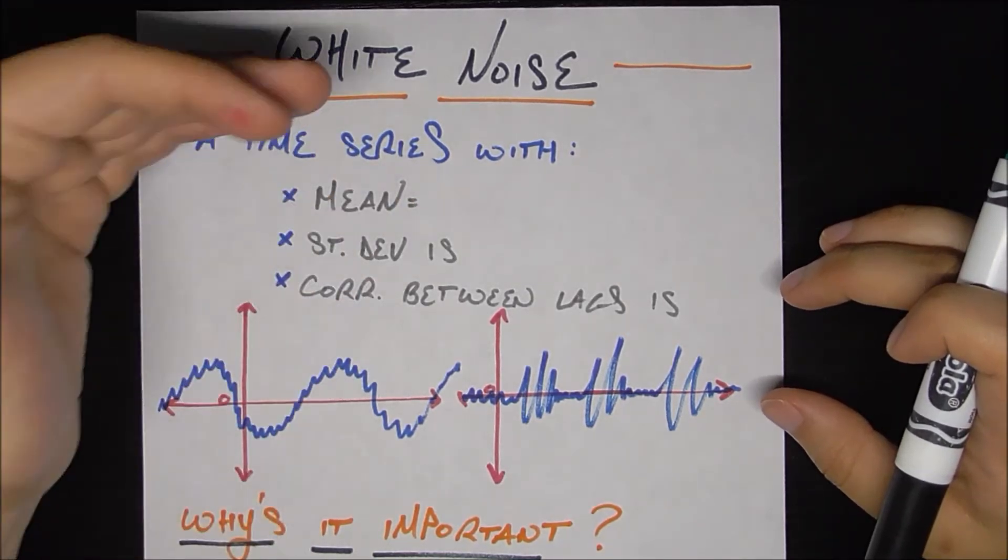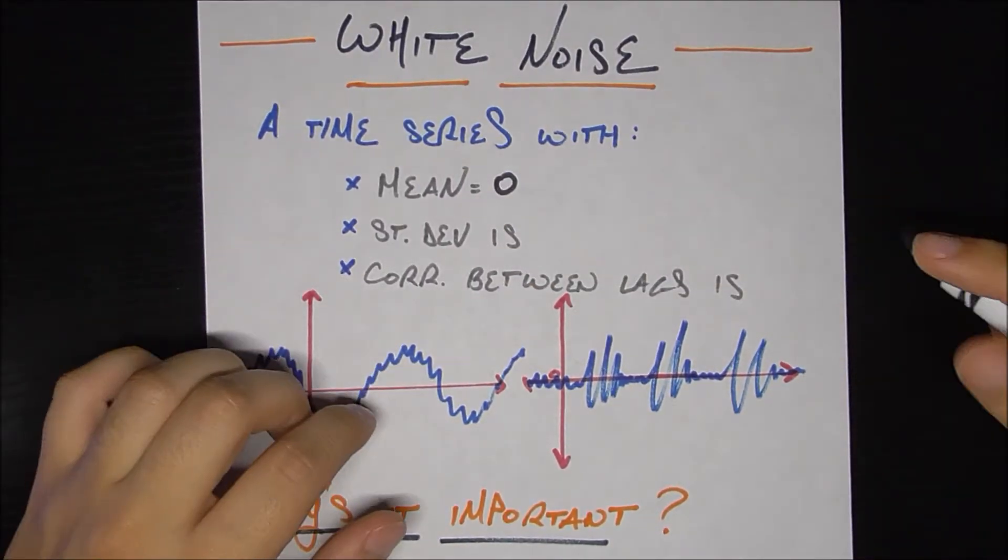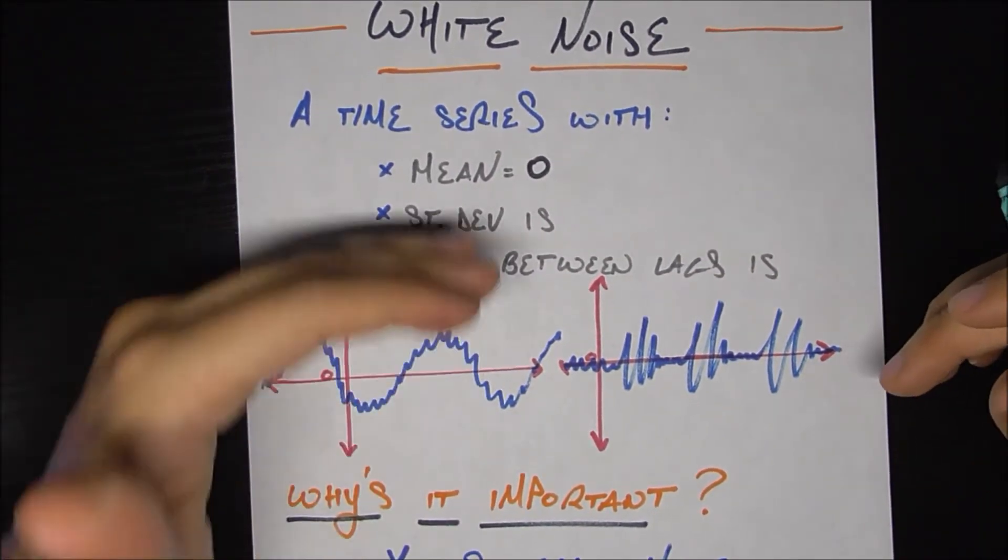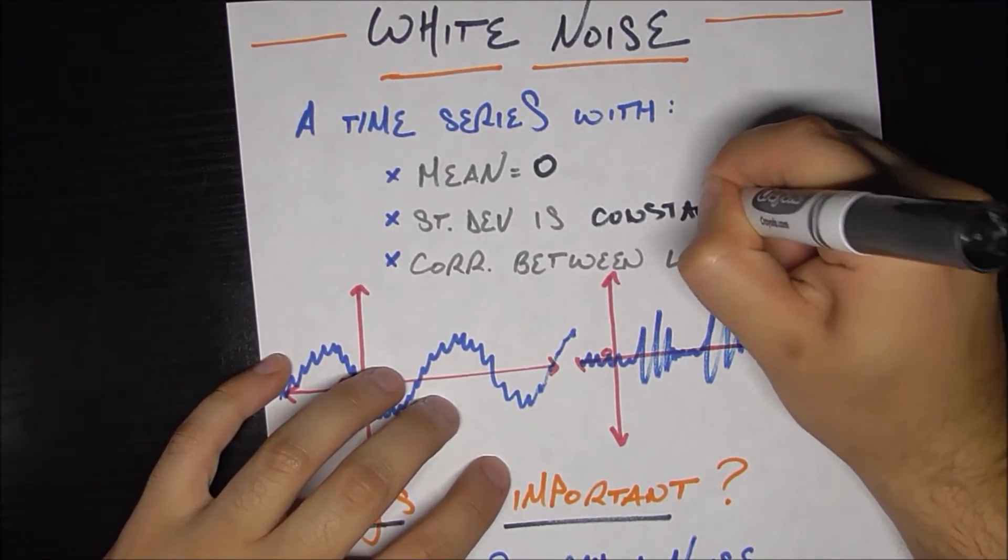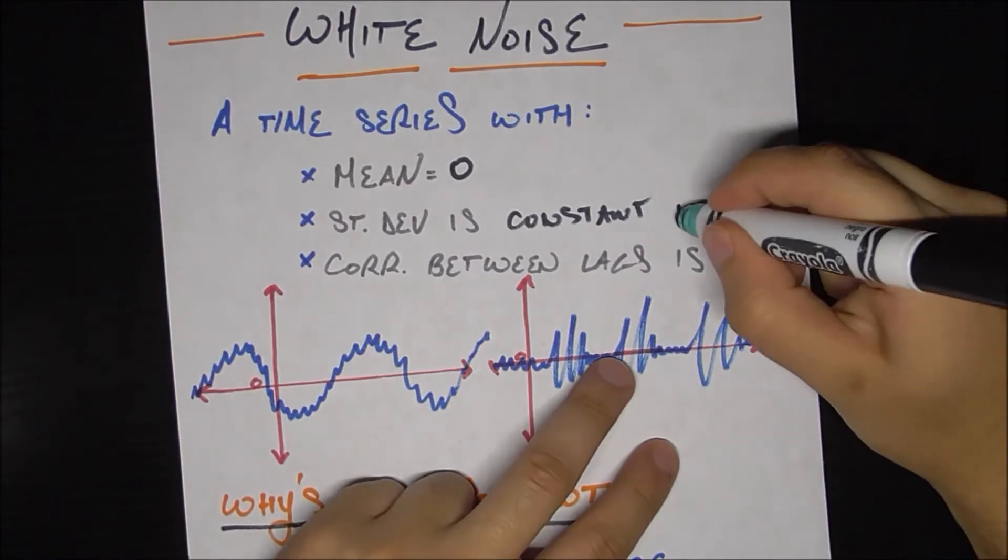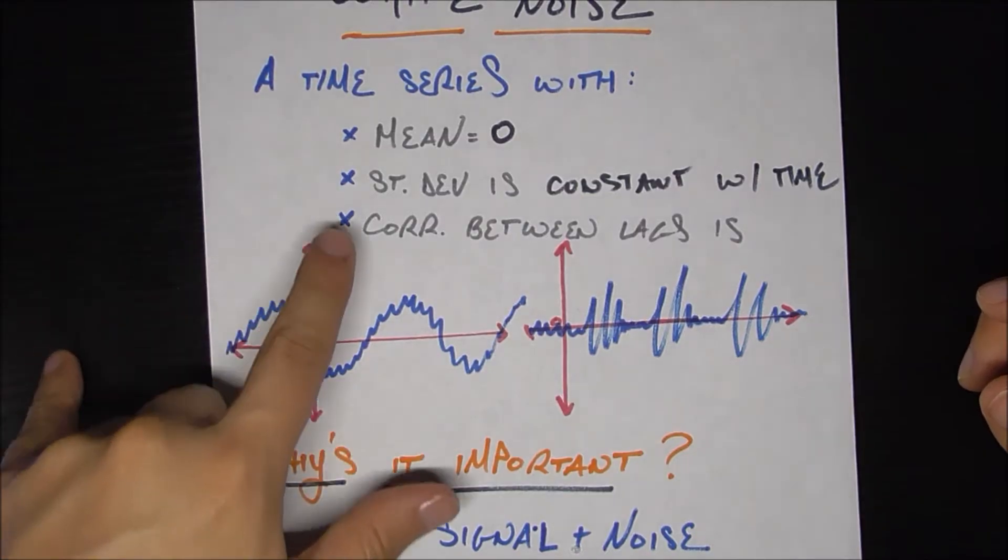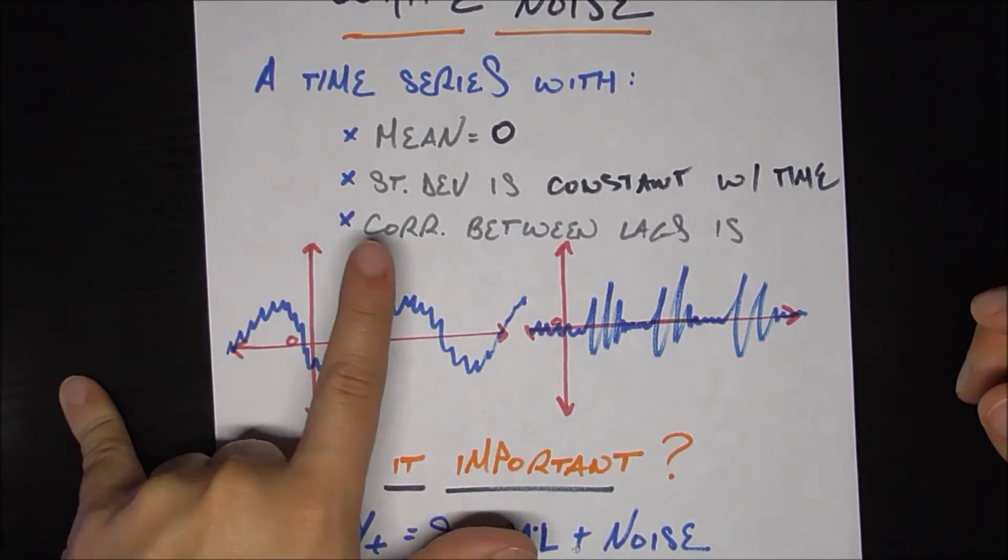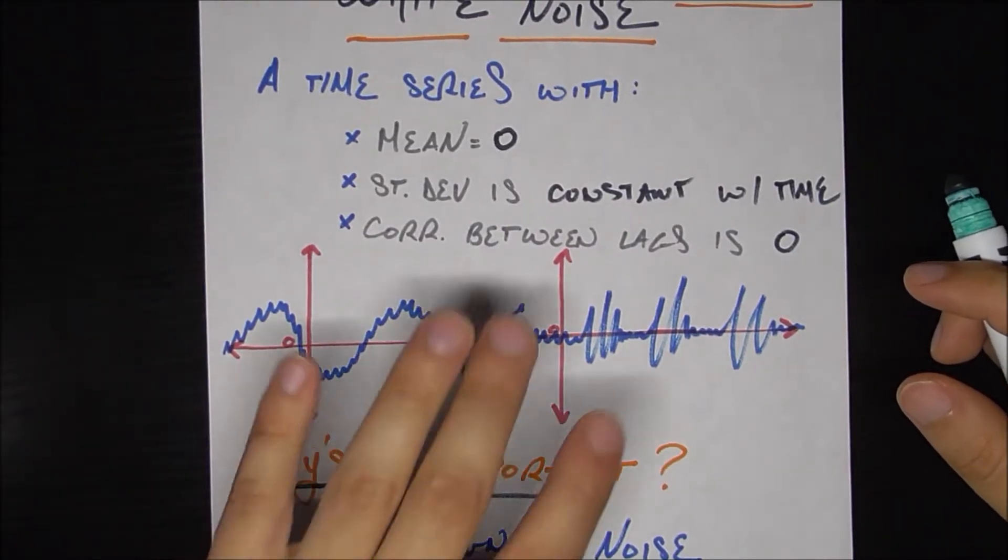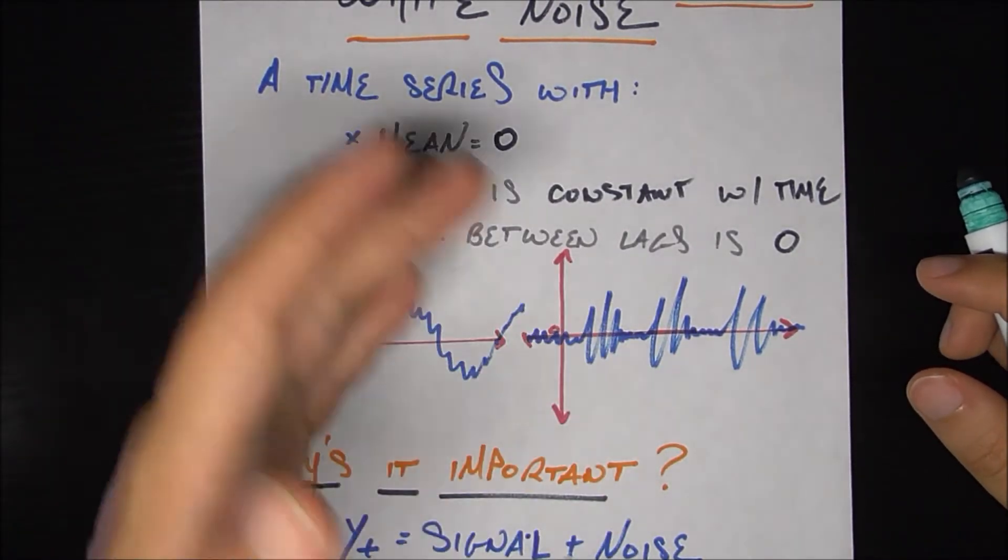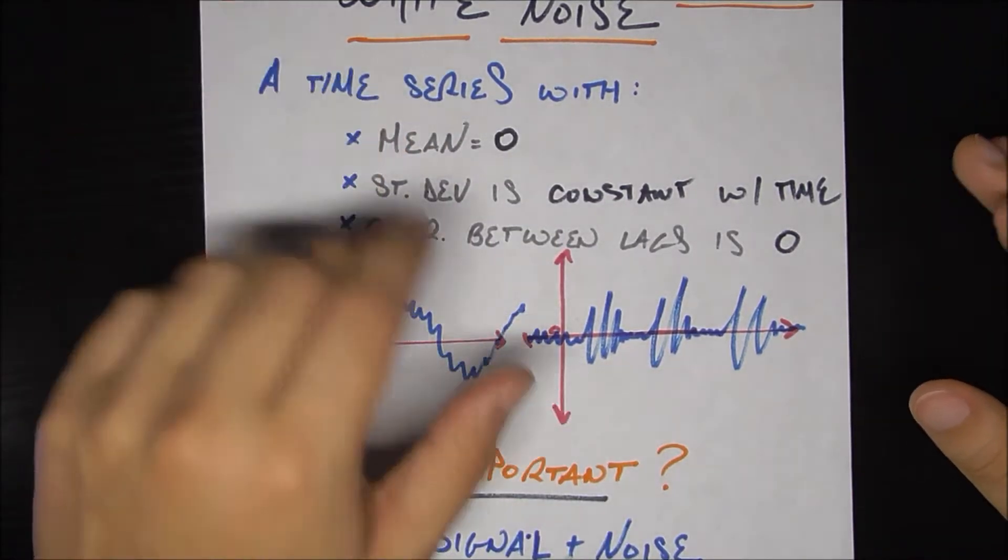A time series is classified as white noise if it has mean equal to zero, that's one criteria. If the standard deviation or the volatility of the time series over time is constant with time and we'll see an example of how that's violated down here. And the last criteria is the correlation between lags is zero. So that means that there should be no correlation between the time series and a lagged version of the time series, whether that's lag one or two or whatever, there should be just no correlation at all.